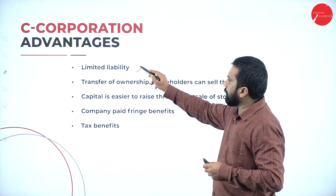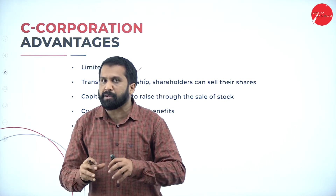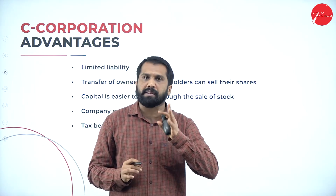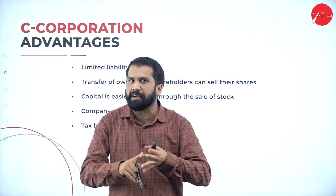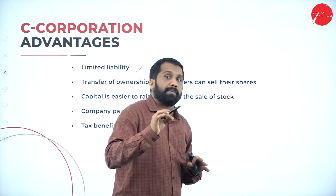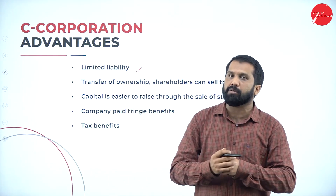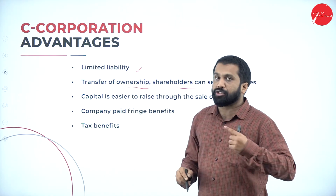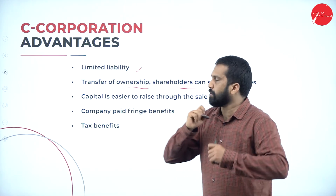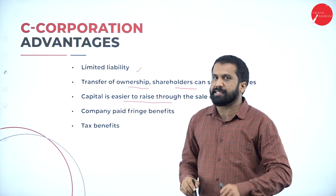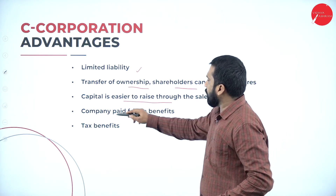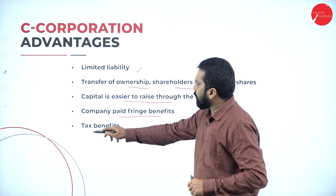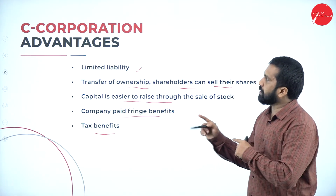Advantages of C corporation: limited liability — if anything happens to that company, the government will not touch your personal property like land, jewelry, or vehicle. Whatever is in the name of the company, only that the government or outsiders will take. Transfer of ownership — shareholders can sell their shares; shares can be transferred from one person to another. Capital is easier to raise. Company paid fringe benefit — earlier it was there, currently it is not. There is also a tax benefit in C corporation.